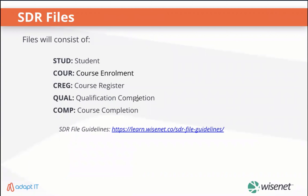We'll go through each section of WISENIT to ensure you do not miss any of the SDR related fields. There are five SDR files, each with a particular purpose. The STUD file is for correlating learners in your WISENIT with learners in the NSI. The COUR or course enrollment is a declaration of what your organization is delivering based on unit enrollments. The CREG or course register file confirms that unit details in your WISENIT match the details on record at TEC. The QUAL or qualification completion file is where you lodge a record of qualification attainment. And the COMP or course completion file records outcomes of unit enrollments.